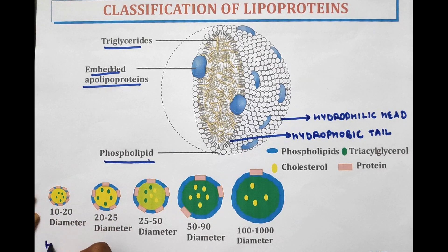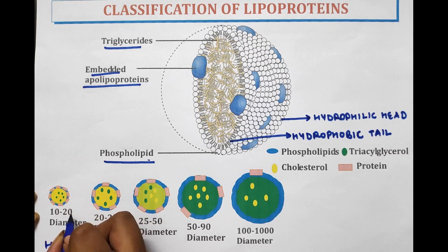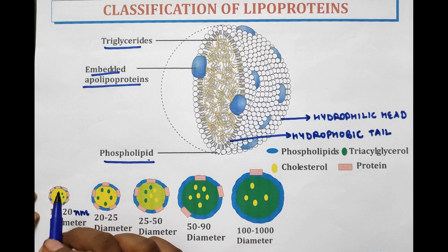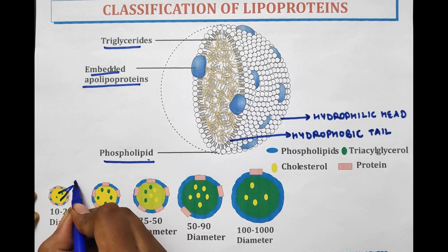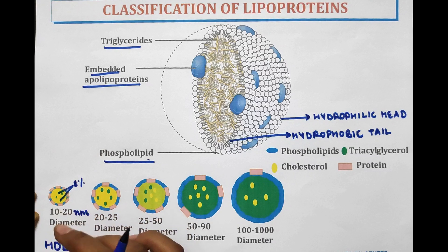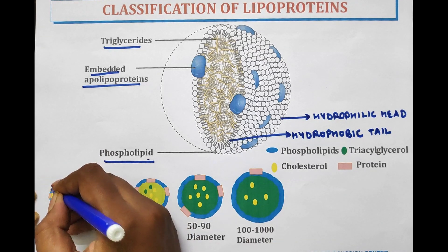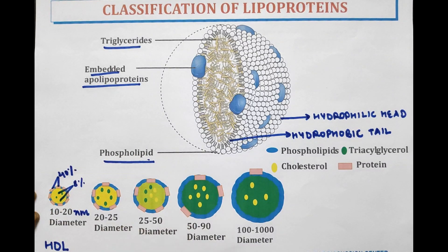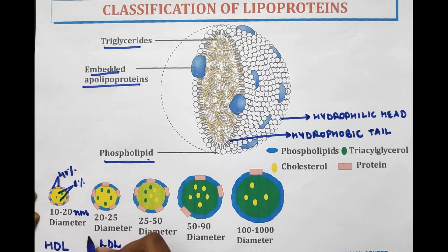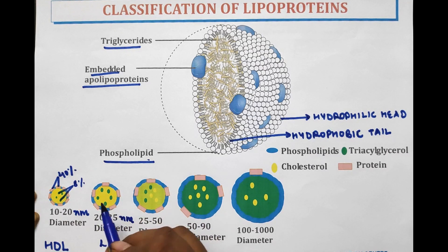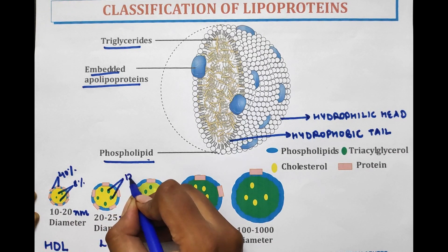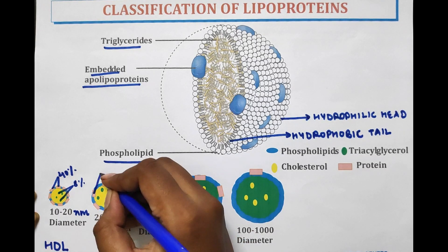The first type is HDL — high density lipoprotein — with a diameter ranging from 10 to 20 nanometers. Triglyceride is present at 8% and protein at 40%. The next is LDL — low density lipoprotein — with a diameter of 20 to 25 nanometers.